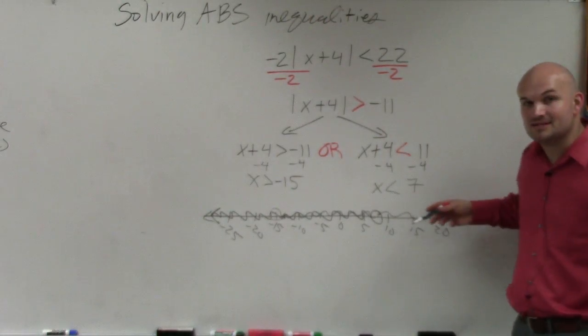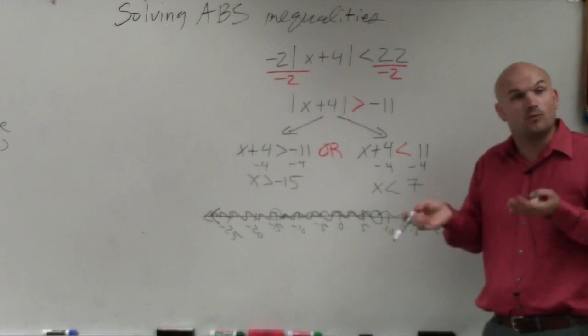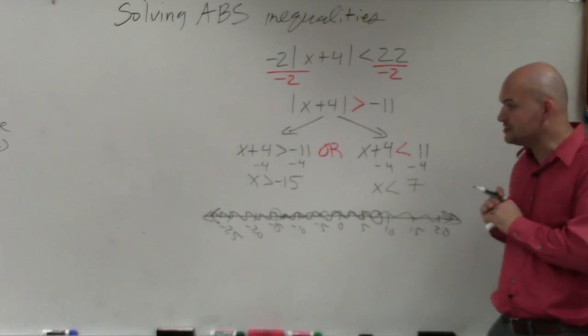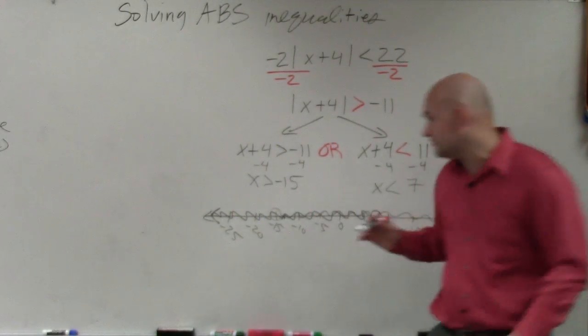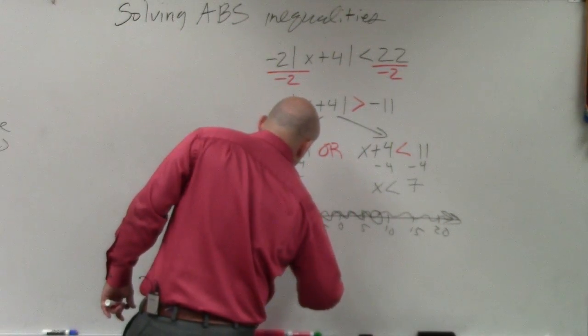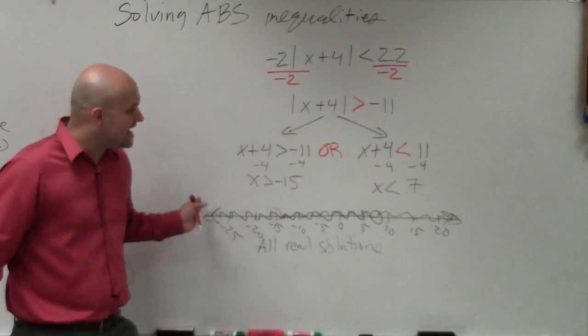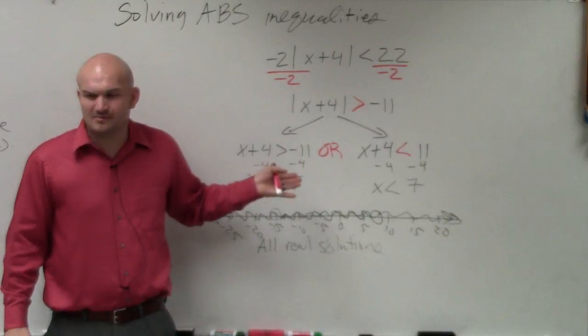All it has to be true is for it to be a solution. It only has to be true for one of them. Well, all of your solutions go infinitely to the left and infinitely to the right. Right? So this example is all real solutions. Because our graphs actually cover the whole number line. Does everybody see that?